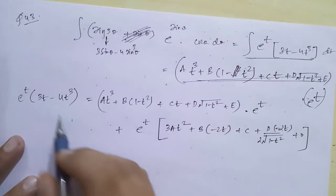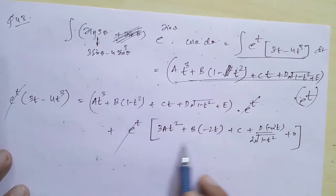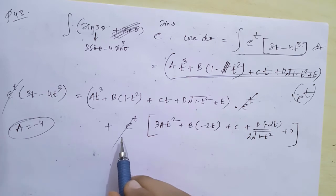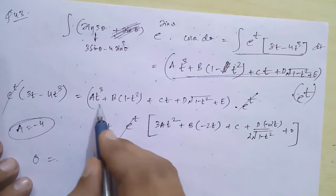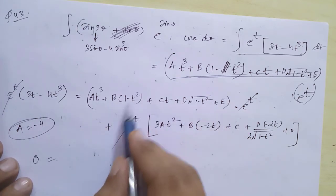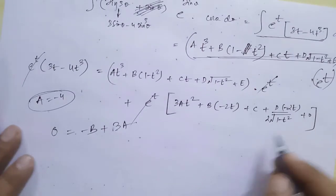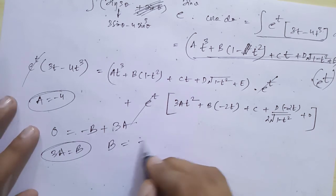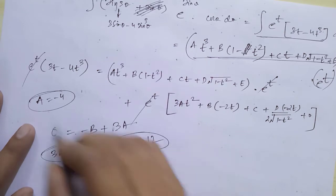After cancelling e^t on both sides, equating the t³ coefficient: left side has −4t³, right side gives term a, so a = −4. For the t² term: left side has 0, right side gives −b + 3a = 0, so b = 3a = −12. Therefore a = −4 and b = −12, so option b is correct.